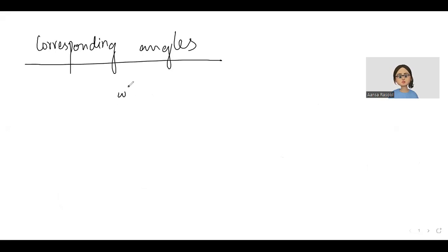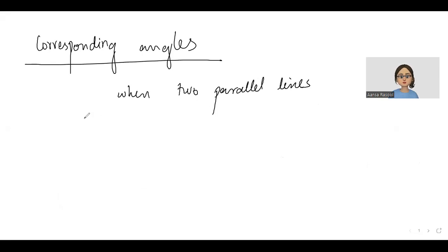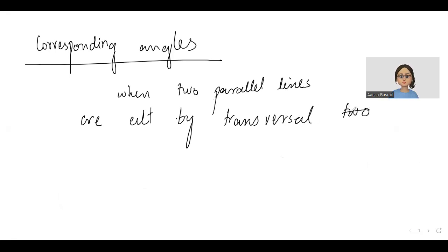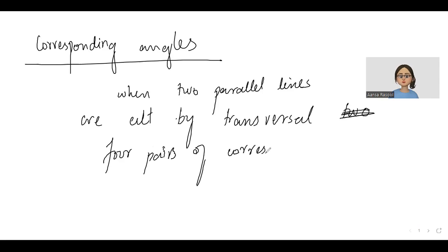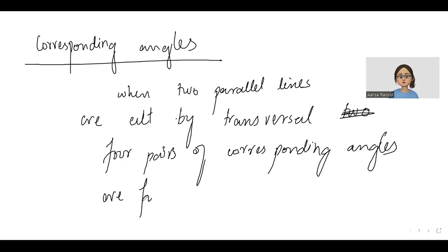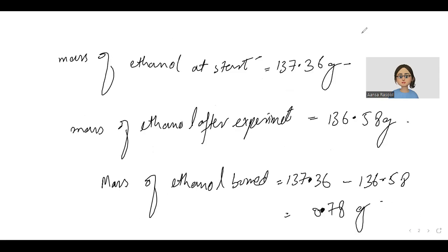Cross-boundary angles are those when two parallel lines are cut by a transversal — four angles are formed at each intersection. Here is all. And the angles are four. Let me tell you.